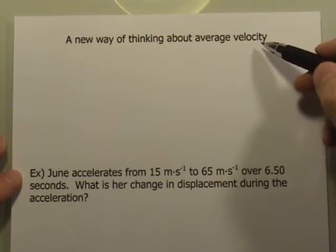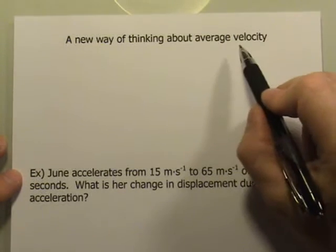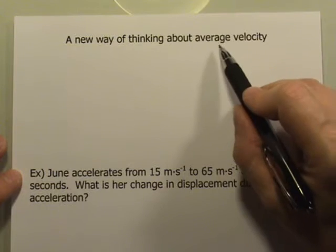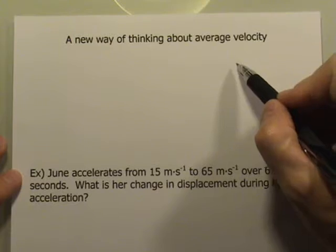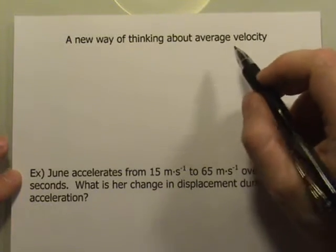When we first defined average velocity, we tended to think about problems in which we had constant velocity. When we had constant velocity, then average and instantaneous were the same thing. But now we're talking about acceleration, so we need to think about the average velocity in a different way.